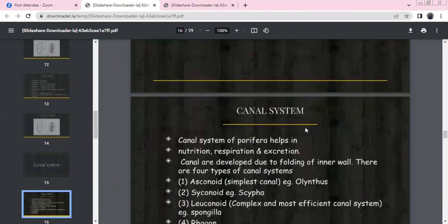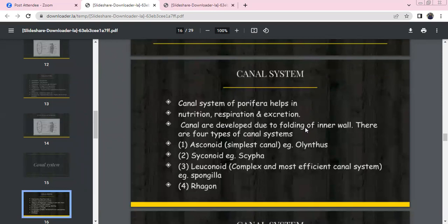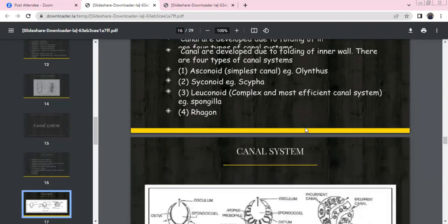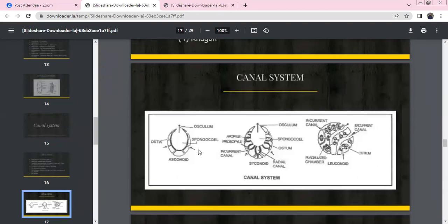Canal system: There are four types of canal systems that help with nutrition, respiration, and excretion. Canals are developed by inner wall infoldings. The four types are asconoid - simple canal system, example Olynthus; syconoid - example Scypha; leuconoid - very complex, examples include Spongilla (freshwater sponge); and rhagon.